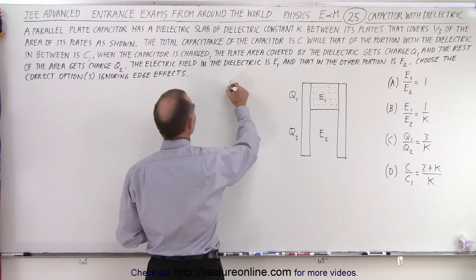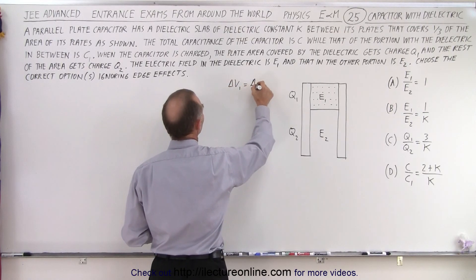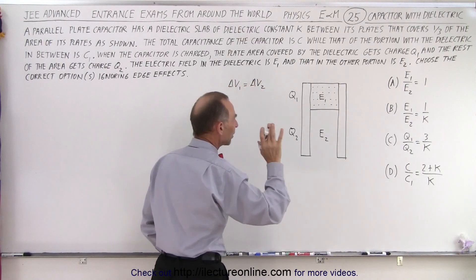In other words, the delta V on portion one must equal the delta V on portion two. That you know for sure.